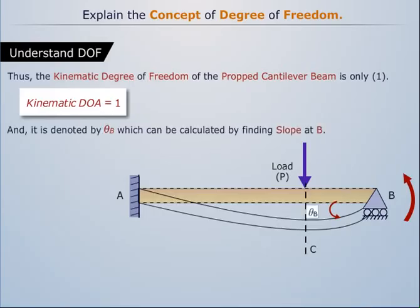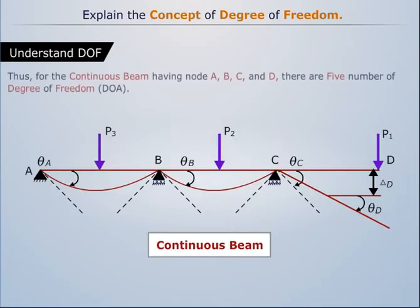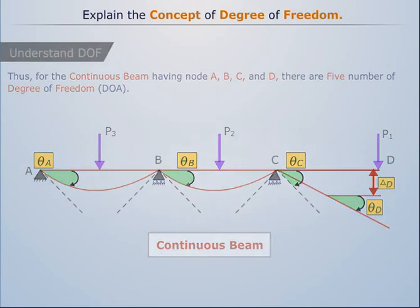Thus, for the continuous beam having nodes A, B, C, and D, there are five number of degrees of freedom. Thus we can summarize as follows.